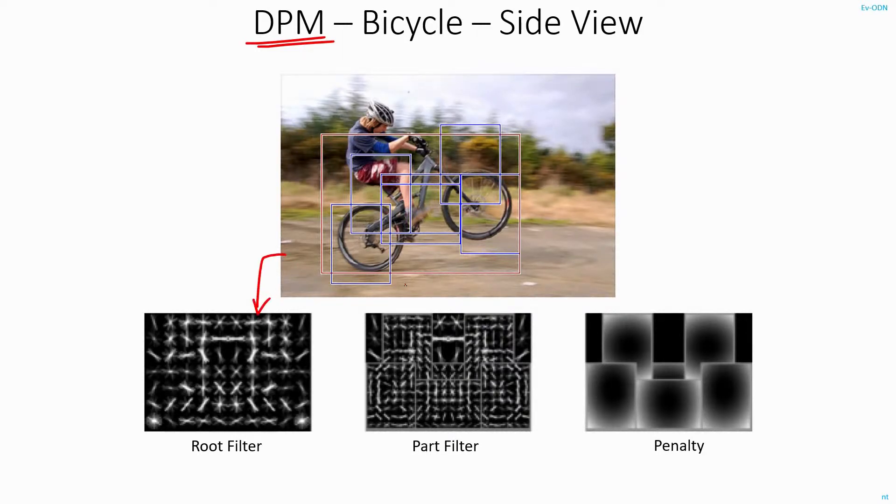This is the main detector for the bicycle and this is the detector for the individual components of the bicycle. This one would have done just fine if both wheels of the bicycle were on the ground.